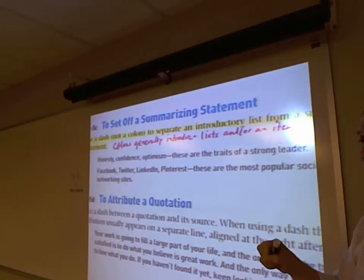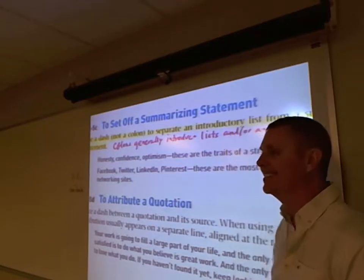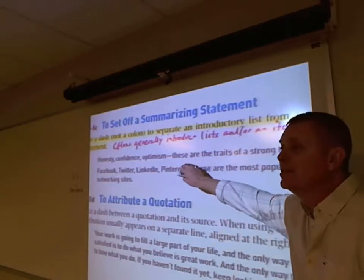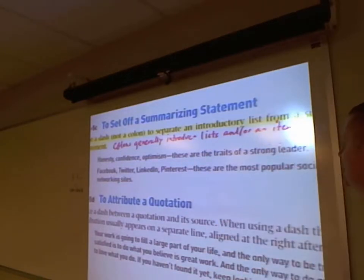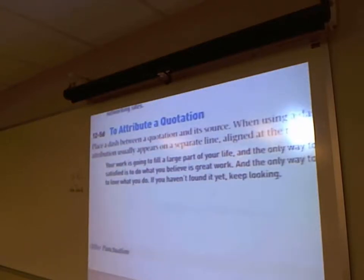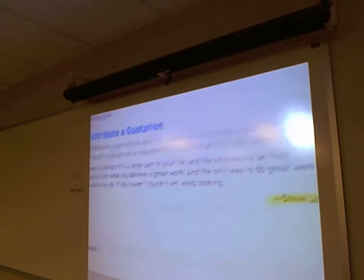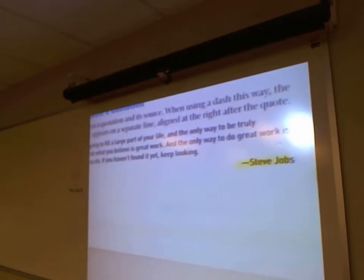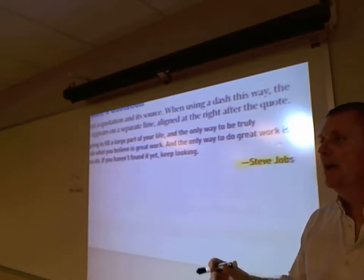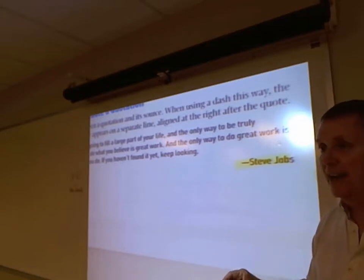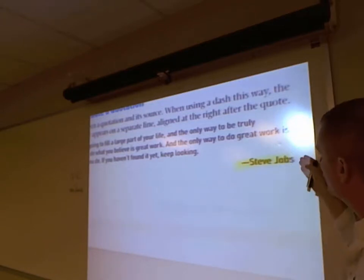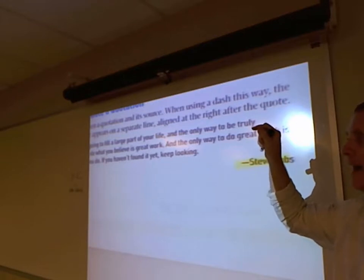To attribute a quotation: for a long quotation, hit the align-right command in Microsoft Word so it goes to the right margin, hit the hyphen key twice to make the em dash with no spaces, and then type the author's name — like 'Steve Jobs.' Then press Enter and change it back to align left. This provides credit for that long quotation.